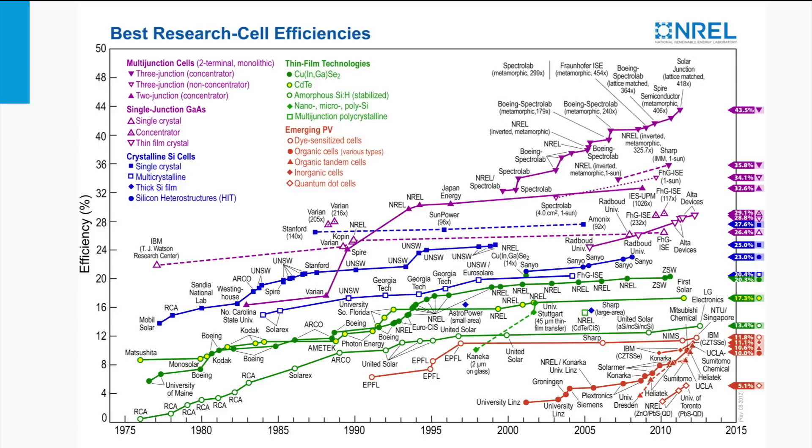The blue lines and dots represent crystalline silicon technology based on monocrystalline and multicrystalline silicon. The record efficiency ranges from 20% up to 25% under standard one sun illumination conditions, and 27% can be achieved under 92 suns illumination.